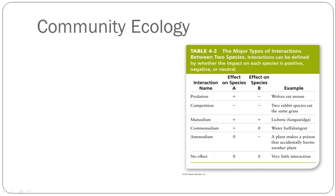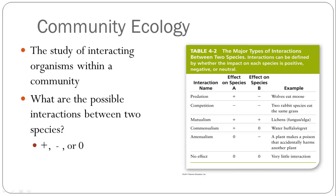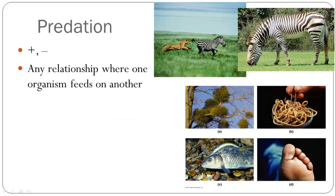Community ecology is the study of interacting organisms within a community — again, multiple species and their interactions. The possible interactions between two species are either positive, negative, or neutral. Both can benefit, and that would be called a mutualism. Both can be negatively affected, and that would be competition. Predation is where one species is positively affected and one is negatively affected — any relationship where one organism feeds off or takes resources from another.